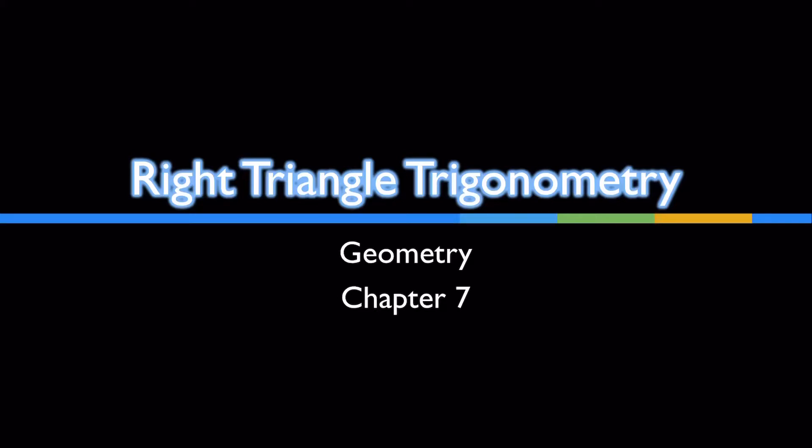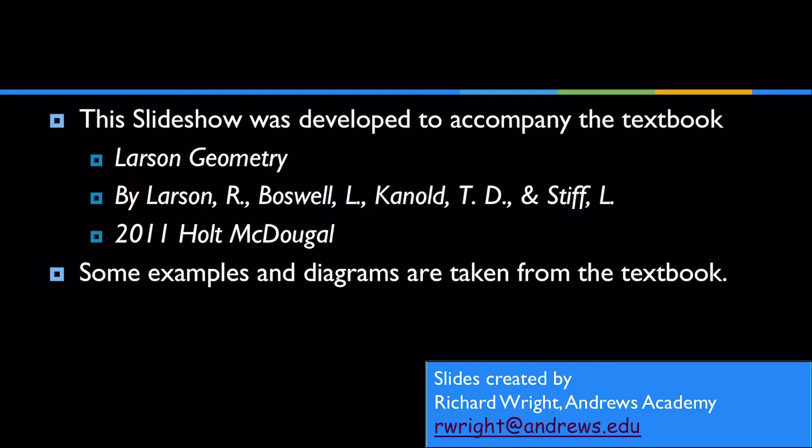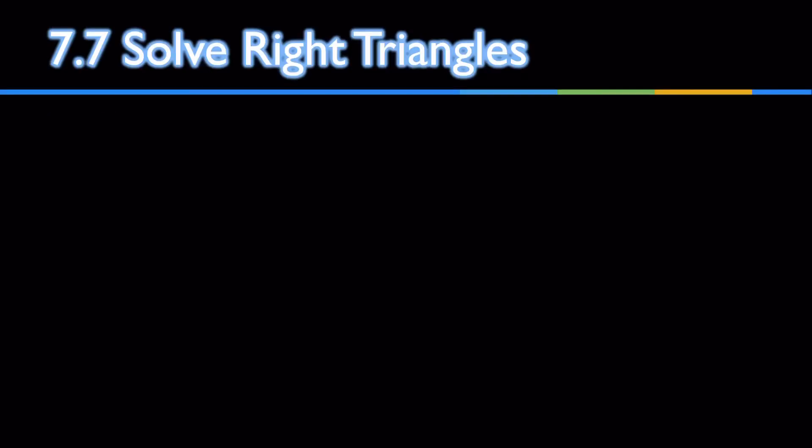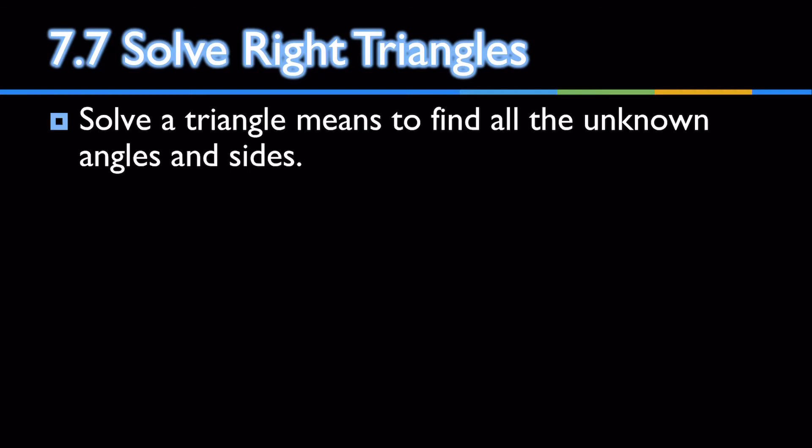Chapter 7 Right Triangle Trigonometry. Lesson 7.7 Solve Right Triangles. To solve a triangle means to find all the unknown angles and sides.